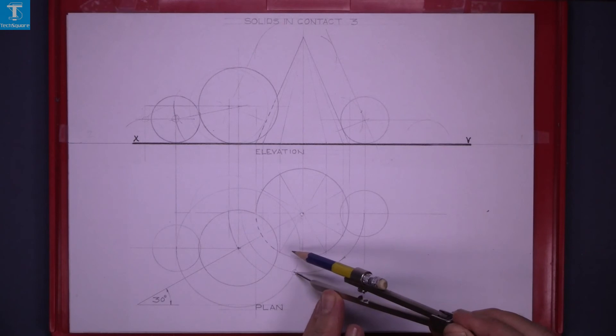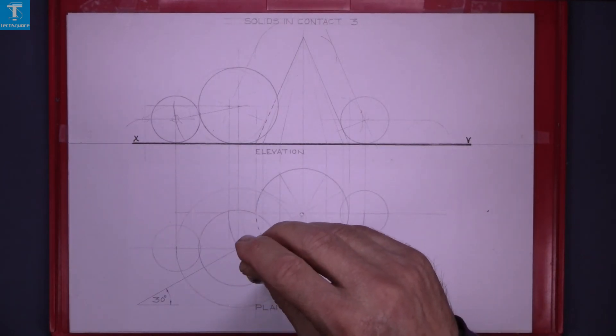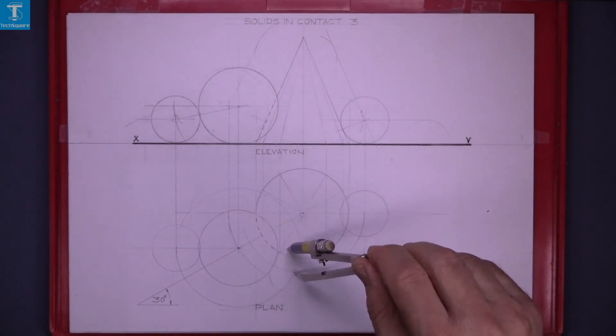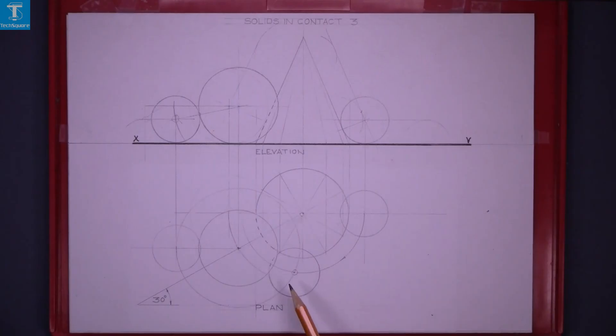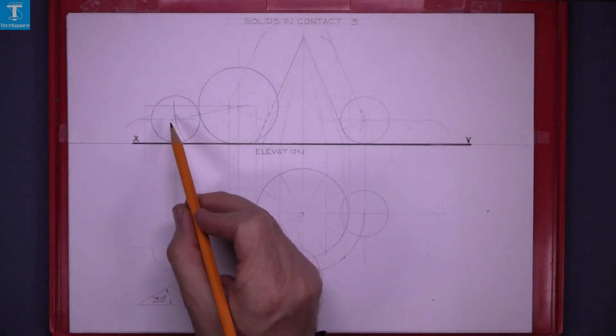That gets us the new position of the small sphere, draw in the plan now. This is going to be a dotted line here. Now to get the elevation, project it up and draw it horizontally across.